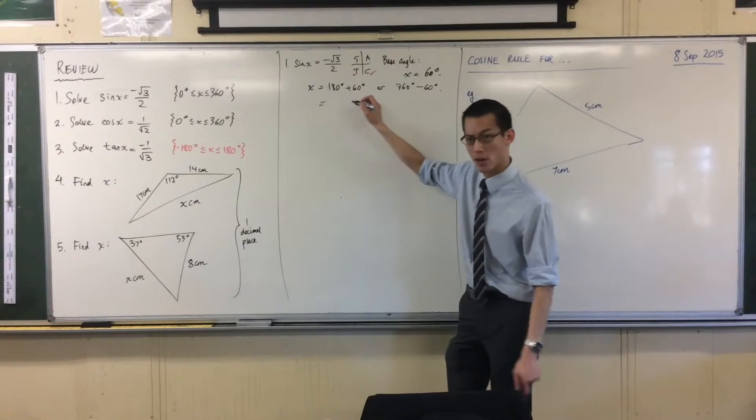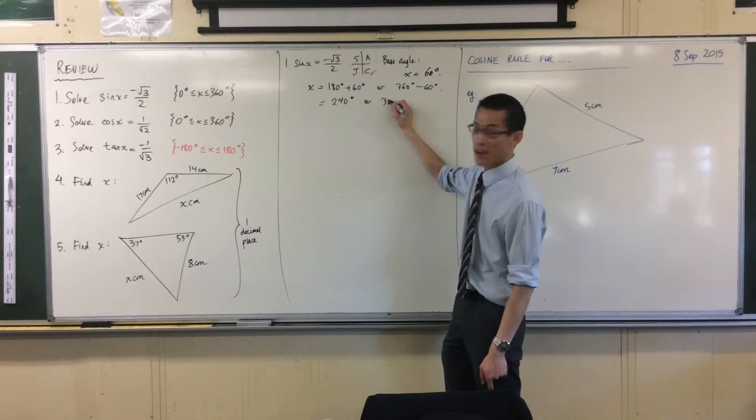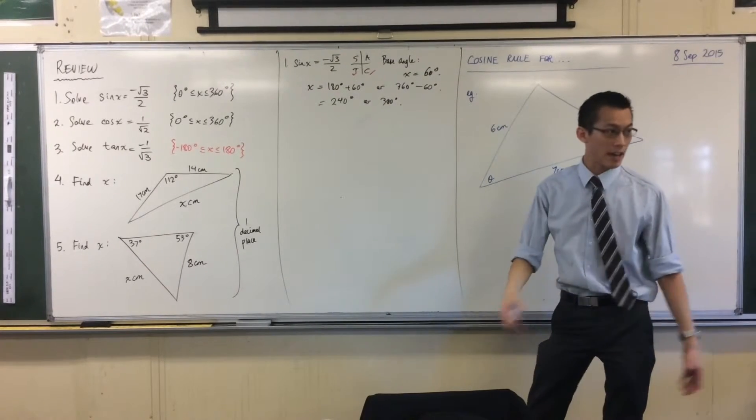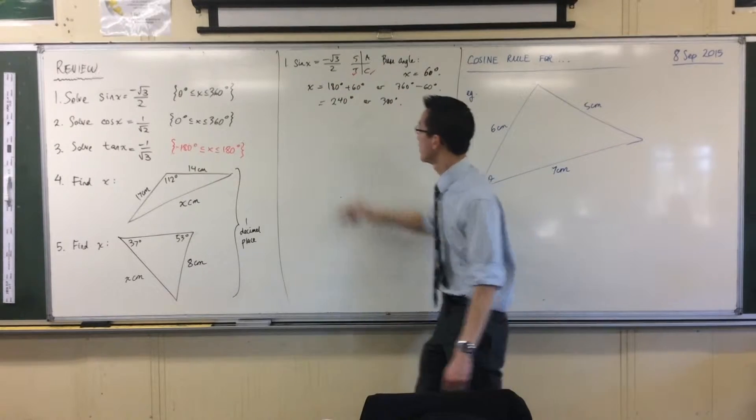So my two answers are going to be... good morning... 240 or 300. And you can check it out, you get your negative answer, square it, you get 3 quarters, so it's root 3 on 2.